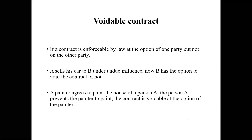The third type is a voidable contract, which is more complicated but not very difficult. If a contract is enforceable by law at the option of one party but not the other, it is known as a voidable contract. For example, if a contract was done based on coercion or undue influence — say somebody pointed a gun at one party — and both parties entered into a contract, the coerced party did not give free or genuine consent.